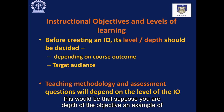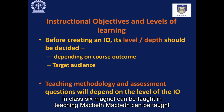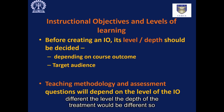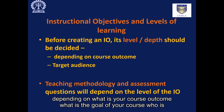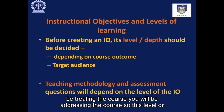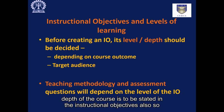An example of this would be that suppose you are teaching Macbeth. Macbeth can be taught in class 6, in class 12, or at the postgraduate level. But the treatment of the topic in each class would be different — the depth of the treatment would be different. Depending on what is your course outcome, what is the goal of your course, who is taking the course, and what the person would be required to do after taking the course, you have to determine the level up to which you will be addressing the course. This level or depth of the course is to be stated in the instructional objectives also.